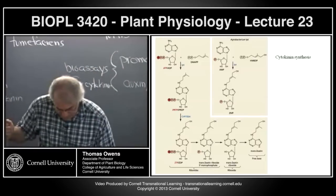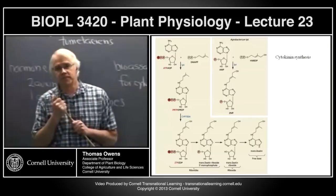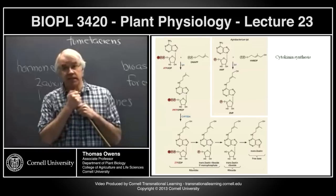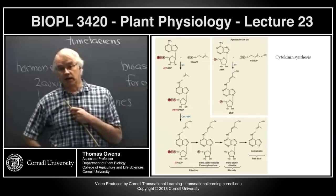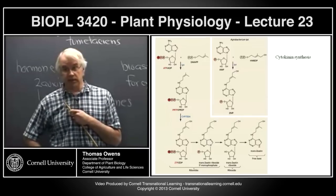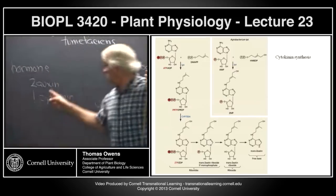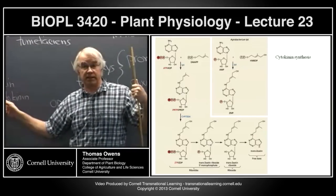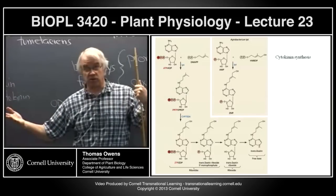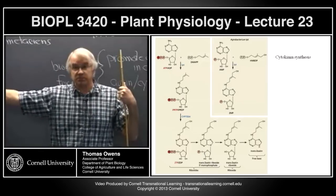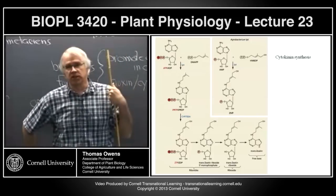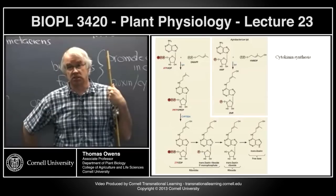The key difference is that the agrobacterium genes are unregulated. Every cell contains genes encoding auxin and cytokinin biosynthesis, but whether those genes are expressed and whether the enzymes are active is the key thing. The enzymes introduced by agrobacterium must have constitutive promoters — they're being expressed all the time. They're just constitutively making cytokinins and auxins, and that's what promotes cells to continue to divide.